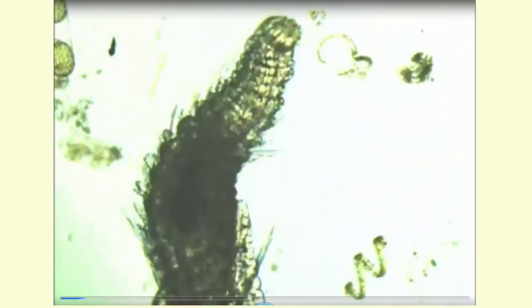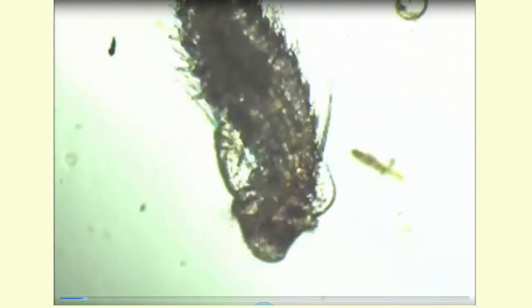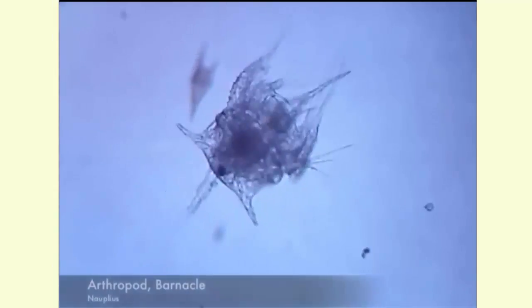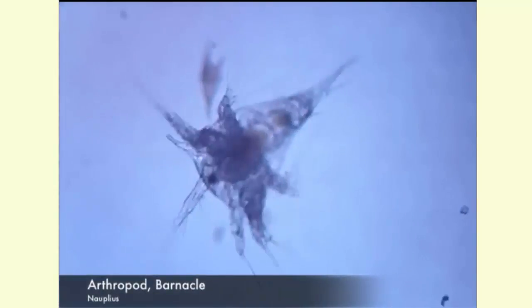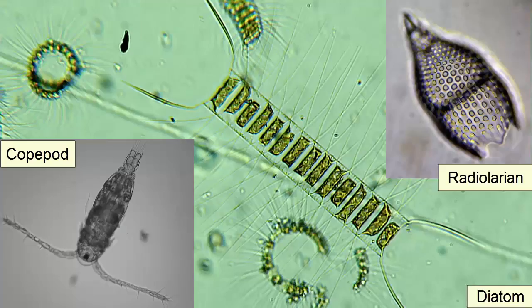Most planktonic organisms are not actually trying to move through water — they're simply trying to stay near the surface where they can get enough sunlight to perform photosynthesis or feed on each other. Plankton, because they cannot move faster than currents, want to maximize their drag to stay afloat. They do so through techniques including floating in a drop of oil, having gas containers inside their bodies, or increasing their overall surface area through appendages, spines, hairs, holes, crevices, and long flat bodies.